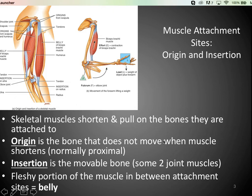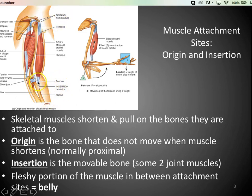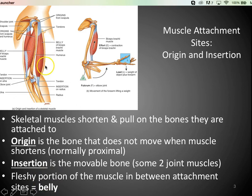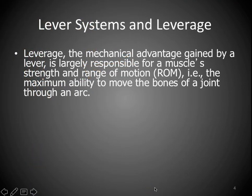The origin of the muscle is the bone the muscle is attached to that doesn't move when the muscle shortens. On the limbs, this is usually proximal — closer to the shoulder or hip. For the biceps, the origin is up at the scapula and the insertion is down on the radius. When you contract your bicep, the scapula doesn't move — your forearm does. The origin is stable; the insertion moves. The belly is the actual fleshy part of the muscle itself.